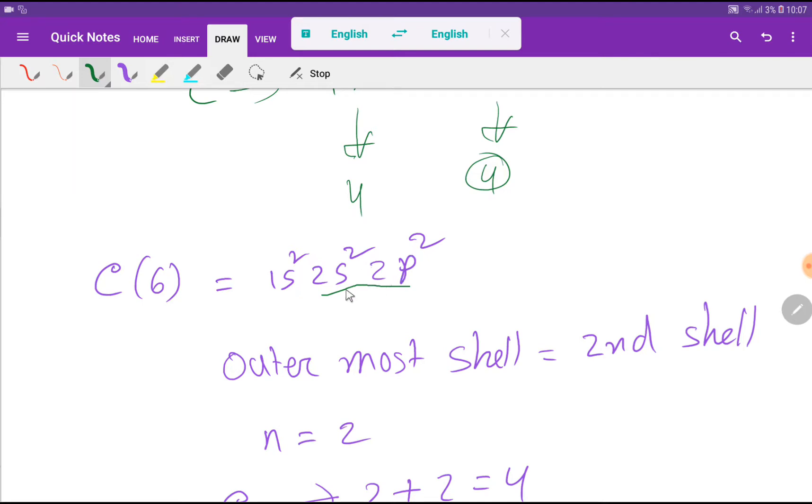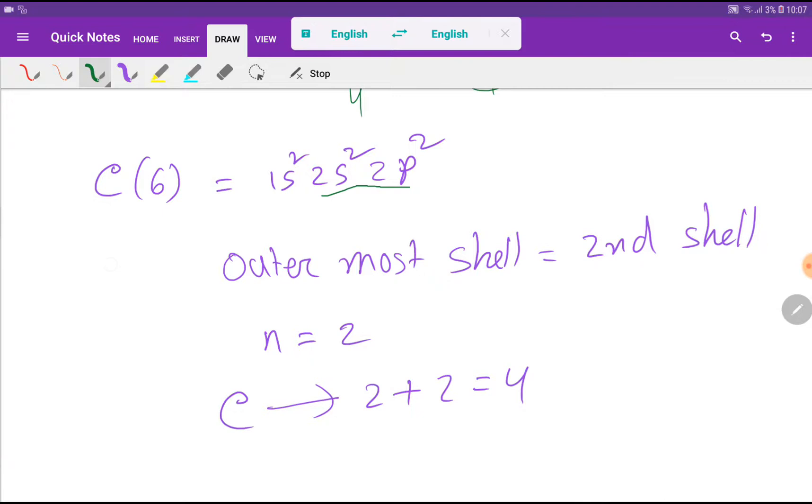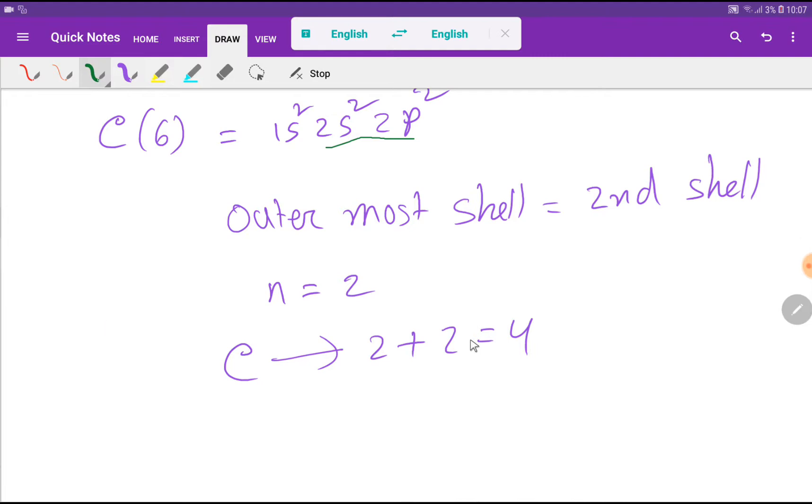The electron in valency shell is called valence electron. So here we have two plus two equals four. The principal quantum number highest value is two. For n equal to two, we are getting two plus two, that is four. That is, carbon has four dots.